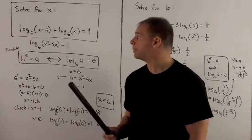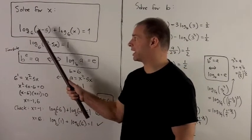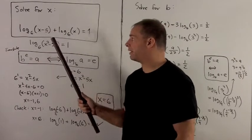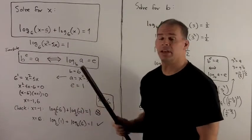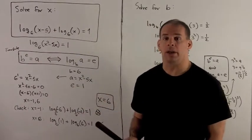Solve the equation for x. Our equation is log base 6 of x minus 5 plus log base 6 of x equals 1.